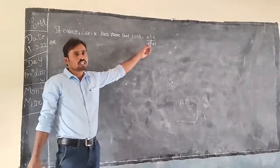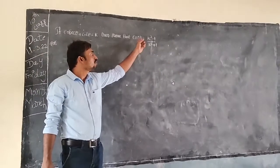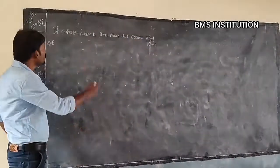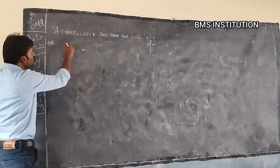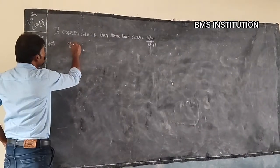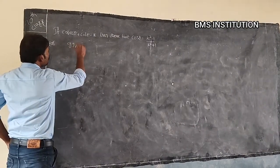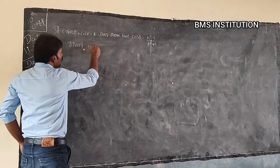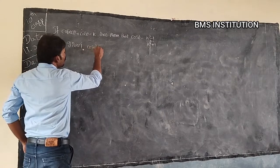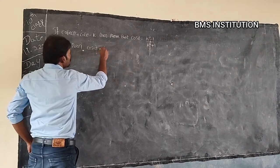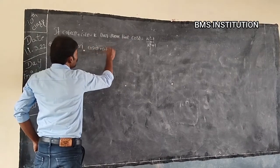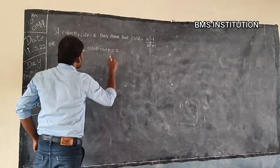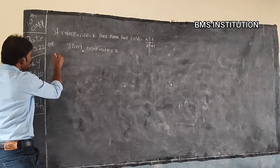We begin by taking RHS to prove LHS. What is given in the problem? First, write what is given: secant theta plus cot theta is equal to k. Take RHS.